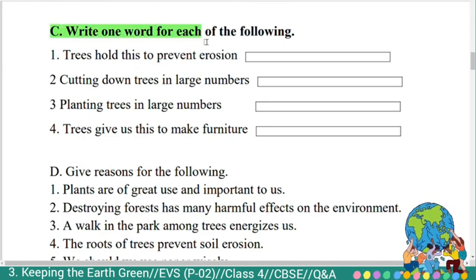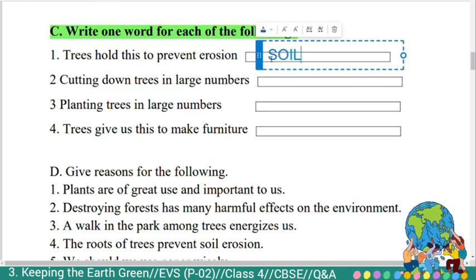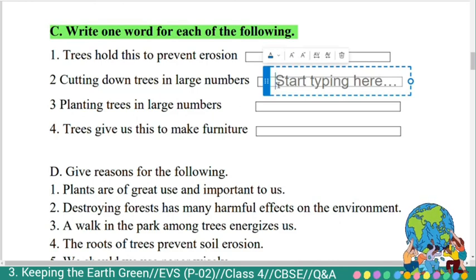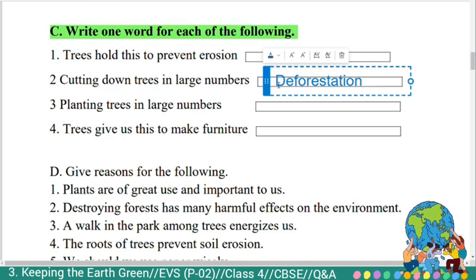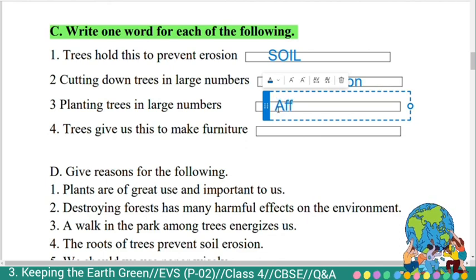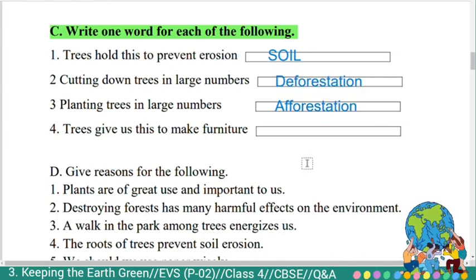Third section: write one word for each of the following. First: 'Trees hold this to prevent erosion.' Answer: Soil. Second: 'Cutting down trees in large numbers.' Answer: Deforestation. Third: 'Planting trees in large numbers.' Answer: Afforestation. Fourth: 'Trees give us this to make furniture.' Answer: Wood.